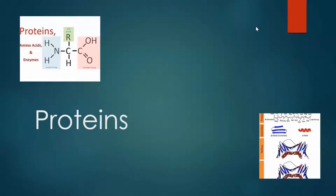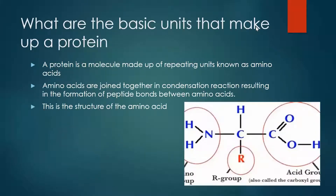Welcome to my presentation on proteins. So what are the basic units that make up a protein? A protein is basically made up of repeating units known as amino acids. Amino acids are joined together in condensation reactions, resulting in the formation of a peptide bond between each of the amino acids.